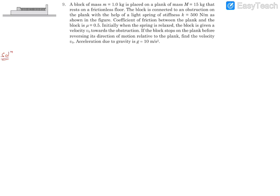The plank has mass M and the block has mass m, given initial velocity v₀. The friction acting here is not impulsive. If we consider small m and capital M together, both spring force and friction become internal forces, so there is no external force in the horizontal direction since the ground is frictionless.